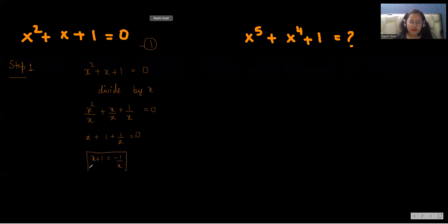So our value for x plus 1 is minus 1 over x. We'll take it as equation 1. Now comes to step 2 by using this equation.